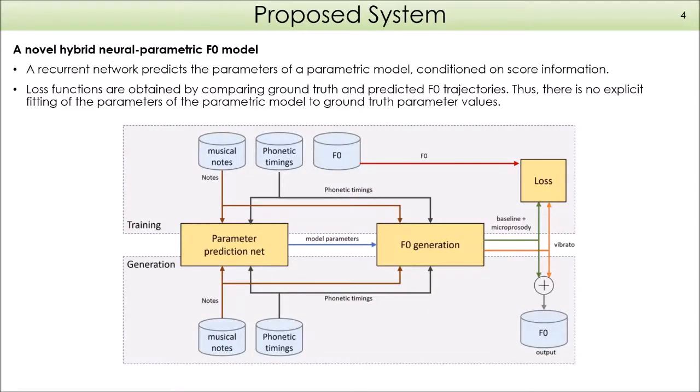Here we see a representation of our proposed model. On top is the training phase and bottom the generation phase. In both cases, musical notes with lyrics and phonetic timings are input to the parameter prediction net, which is a recurrent network that predicts parameters of the parametric model used in the F0 generation block to predict the F0 curve. The loss functions compare the ground truth and predicted F0 curves. In this way, there's no explicit fitting of the parameters of the parametric model to ground truth parameter values.